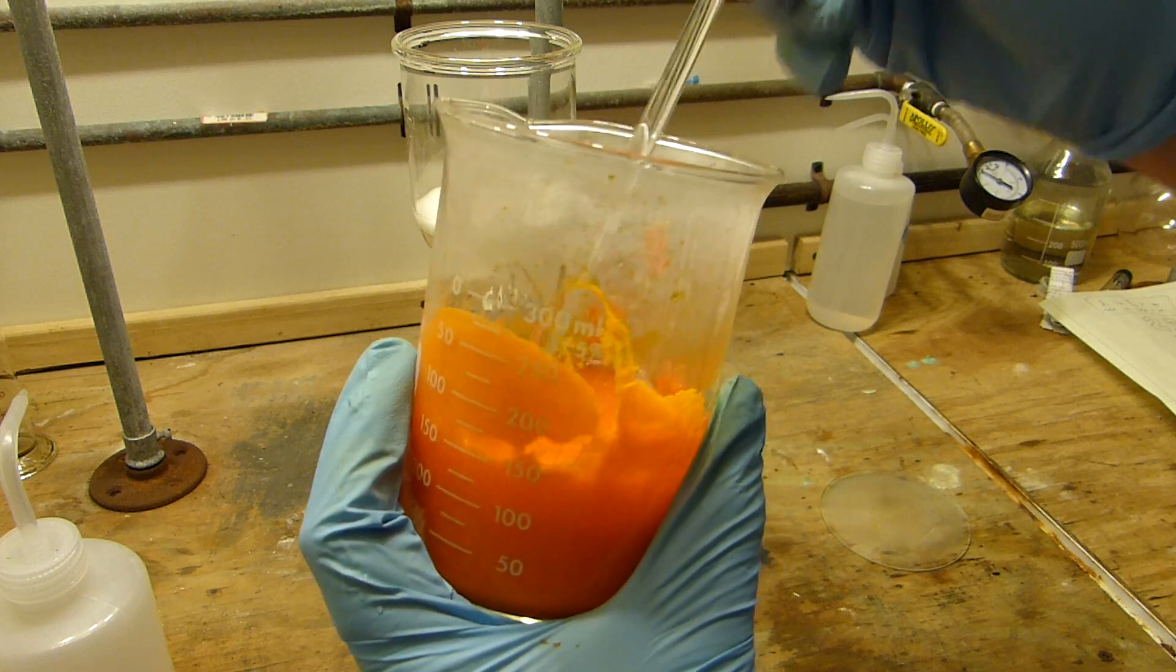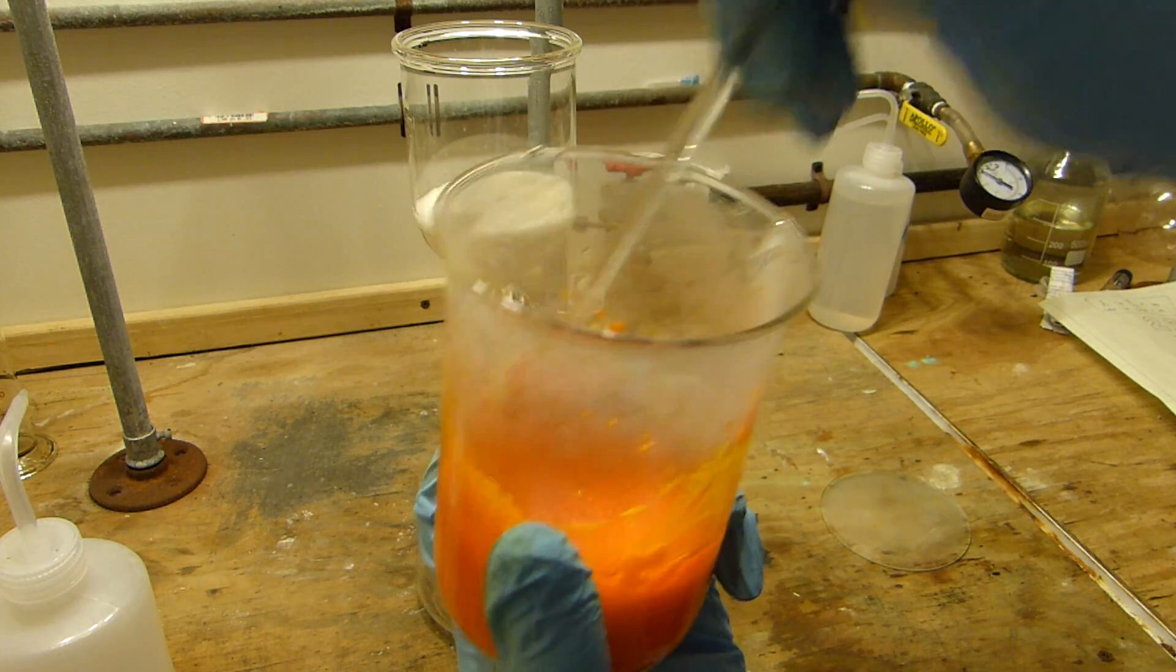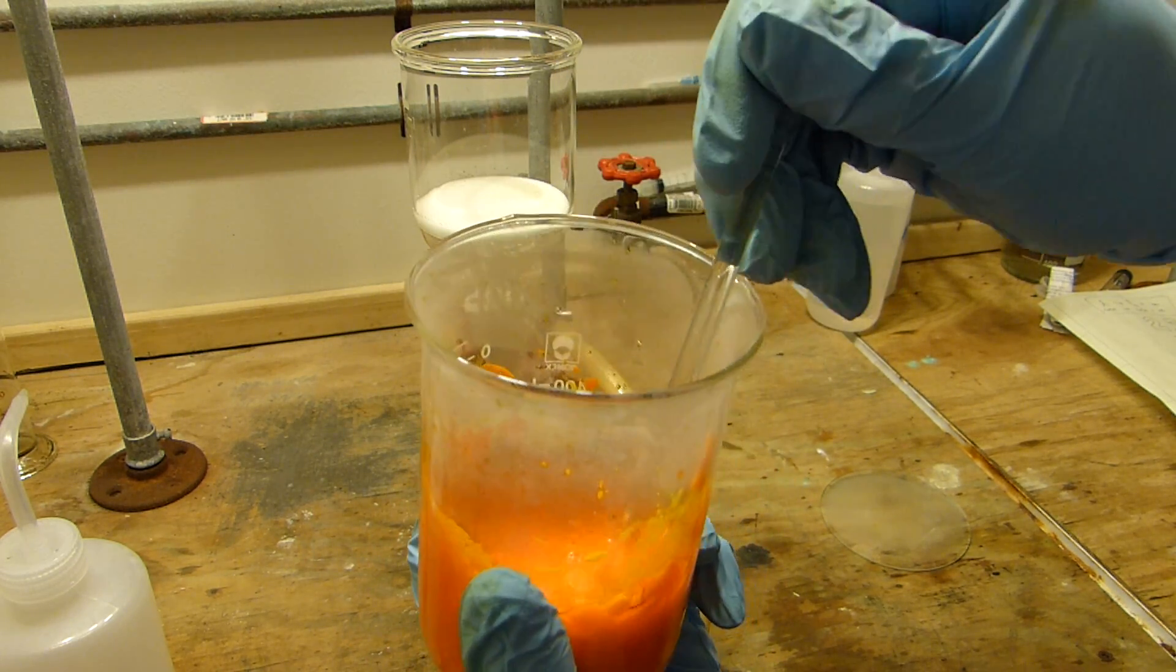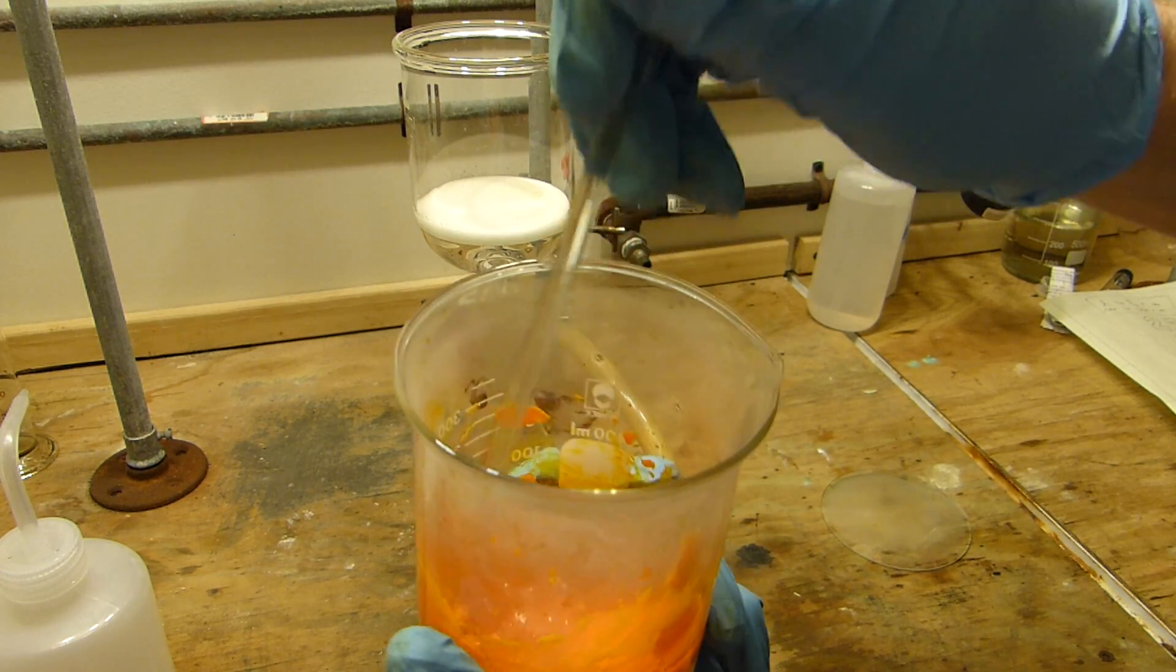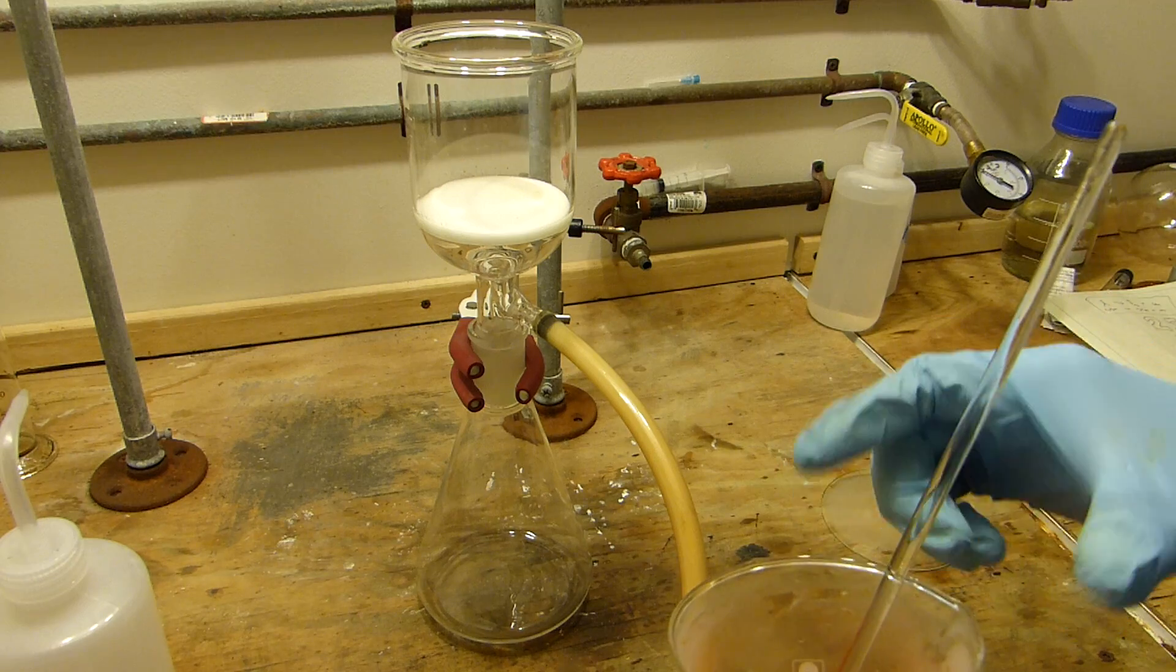I'm just going to try and break up as much of the chunks as I can. They sort of formed on the sides and stuff. I think it was starting to freeze a little. So as soon as the chunks are broken up then I'm going to go ahead and vacuum filter.